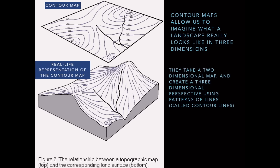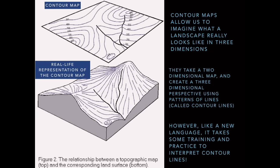Contour maps take a two-dimensional map and create a three-dimensional perspective using a pattern of lines called contour lines. The top map is a contour map with a series of lines and numbers, and the bottom is showing a three-dimensional representation of that area. This takes some practice, so be patient — you'll have to do this more than once to get the hang of it. Like a new language, it takes experience and practice to interpret these lines.